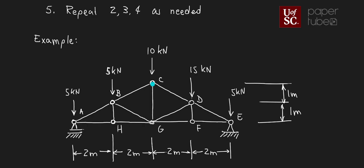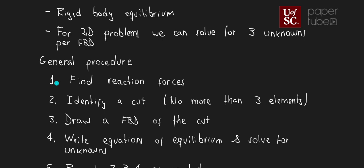In the previous video, we obtained the reaction forces, so I'm not going to go through that derivation again — you can go back to the previous video. That's the first step, to identify the reaction forces. That step is common between the method of sections and the method of joints. The second step — one of the important points in this method — is to identify a cut, no more than three elements as a rule of thumb, so we can use either side of that cut as a rigid body.